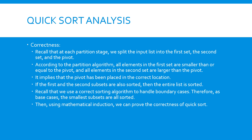Now let's analyze the correctness of the algorithm. We will use mathematical induction to prove the correctness. First, consider the partition procedure. When it completes, we have all elements that are smaller than or equal to the pivot being placed before the pivot, and all elements larger than or equal to the pivot being placed after the pivot. It implies that the pivot has been placed in the correct location. If we can sort the two subsets respectively, then we can show that the entire list is sorted. While the algorithm does not explicitly sort the two subsets, we can show that they are actually sorted. If the subsets are large, the algorithm will recursively break down the subsets until they become small enough. In this case, they will be sorted brute force. When the subsets are sorted, together with the fact that the pivot is placed in the correct location, we can conclude that the entire list is sorted. And by reversing the above logic, we can use mathematical induction to complete the proof.